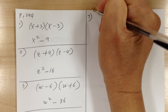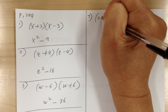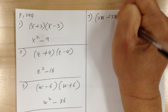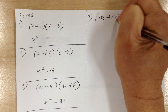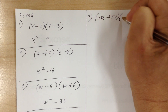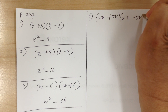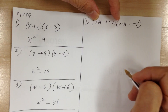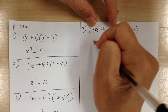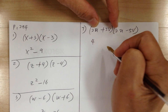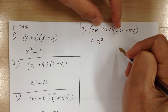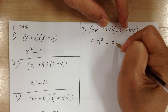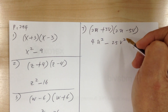Number 7: you have 2u plus 5v times 2u minus 5v. Multiply the F and L, so you're going to get 4u squared minus 25v squared.